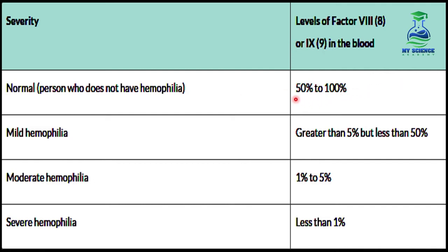In a normal person, clotting factors are about 50 to 100% present. In mild hemophilia, factors 8 and 9 are more than 5% but less than 50%. In moderate hemophilia, they are 1 to 5%, and in severe hemophilia, they are less than 1% present.